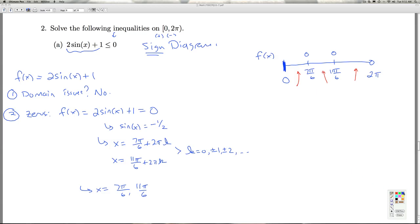Now we have to test and see what's happening in these intervals. The f(x) is 2sin(x) + 1. We pick something over here. We can actually pick 0. Zero is not a zero of the function, but it's in the interval. I get 2 times sin(0) + 1. That's going to give me sin(0) is 0 times 2 plus 1 is 1, so I'm going to be positive on that interval.